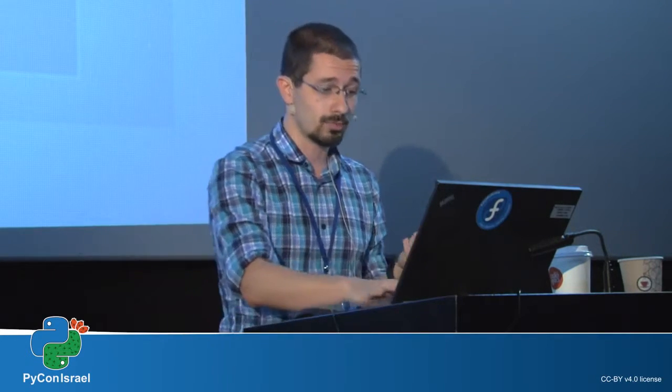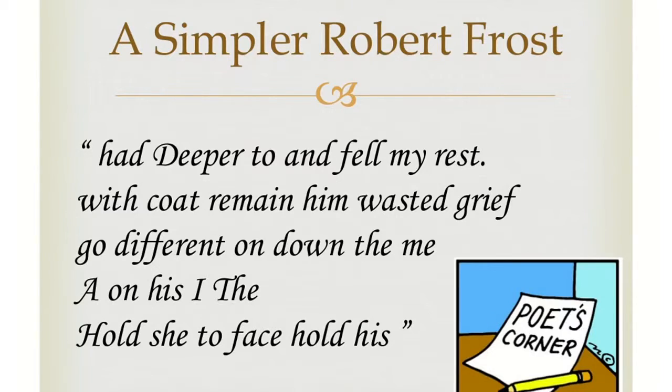I used this very simple method to create a Robert Frost poem. I took all the words, counted each one, got the probabilities, randomized words, and we get a poem. The beautiful thing about poetry is that it doesn't matter how nonsensical this is — you can't tell me this isn't poetry. This is art. My version one Robert Frost poem is: 'Had deeper too and felt my rest, with code remain him wasted grief. Go different on down the me. A on his, I the. Hold she to face, hold his.' This is deep, as you can probably see.